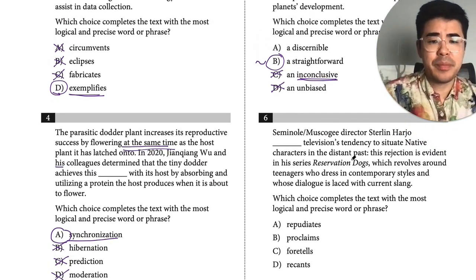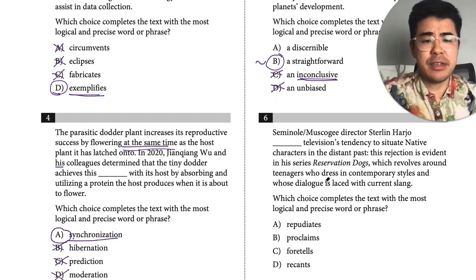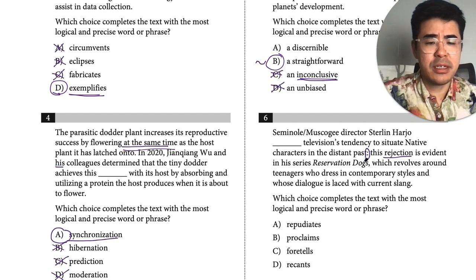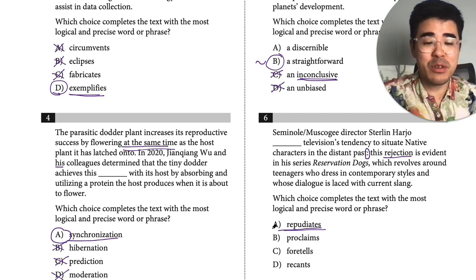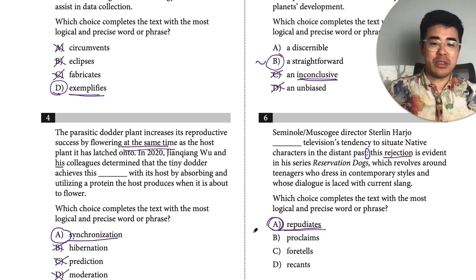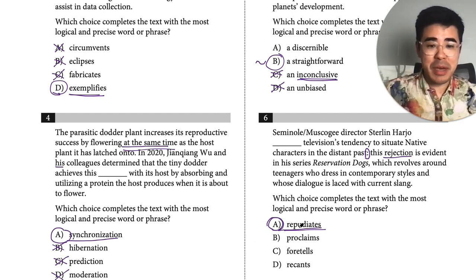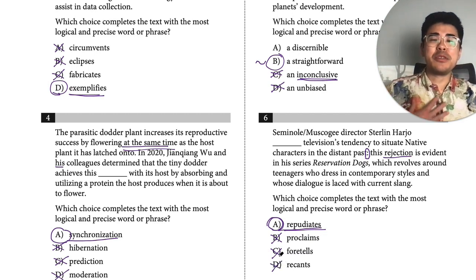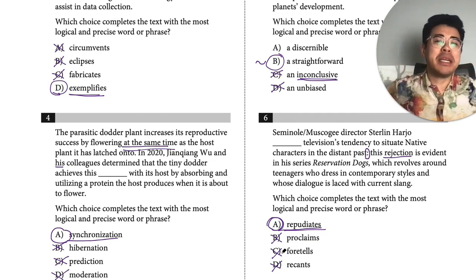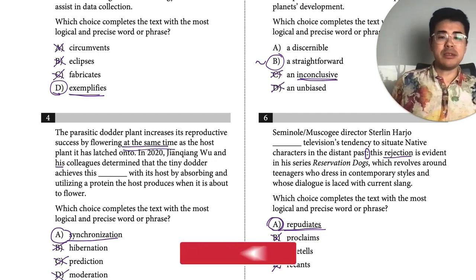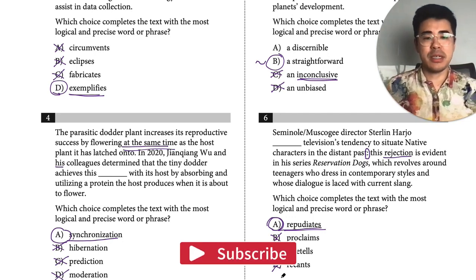Then we have this director who has a tendency to situate native characters in the distant past. This rejection is evidenced in his series — there's a colon showing an explanation, so he's rejecting it. 'Repudiate' is a fancy way of saying reject — this is one of the vocab words I had to learn when I was taking the SAT in 2003, so I guess vocab is back. 'Proclaiming' is showing similarity, 'foretell' is showing he's going to do it, 'recant' is to take back what you said. Repudiate is purposely doing the opposite.